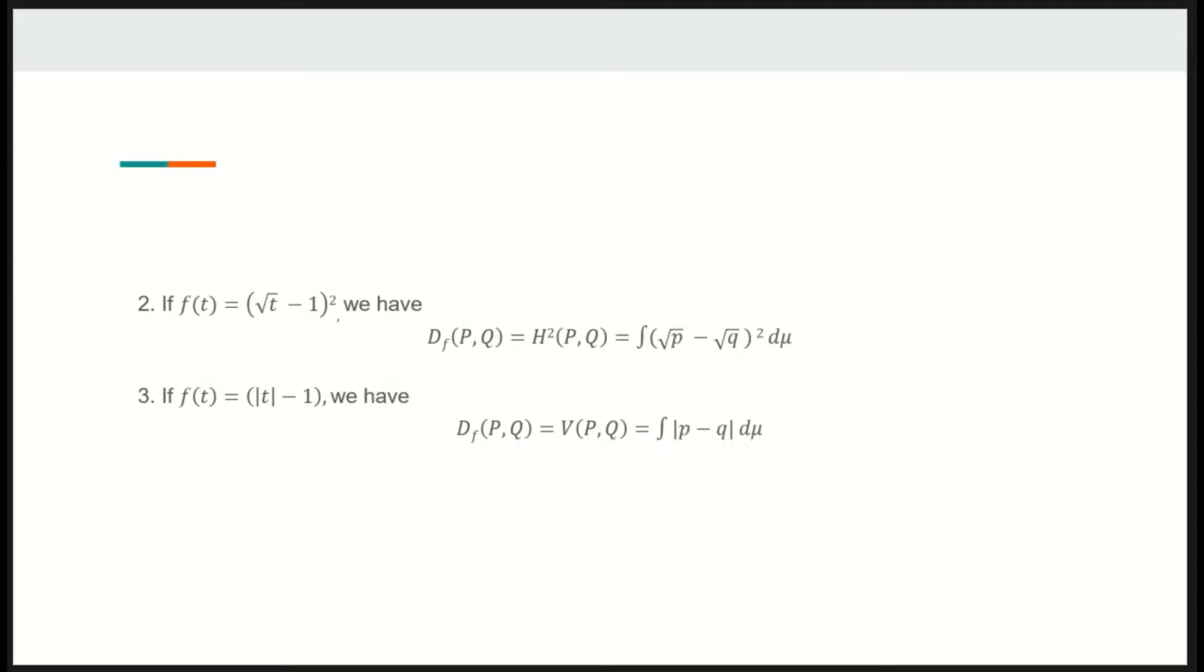Considering two other functions from the same class, we get the Hellinger divergence and the total variation distance, which are important measures in statistics and information theory.